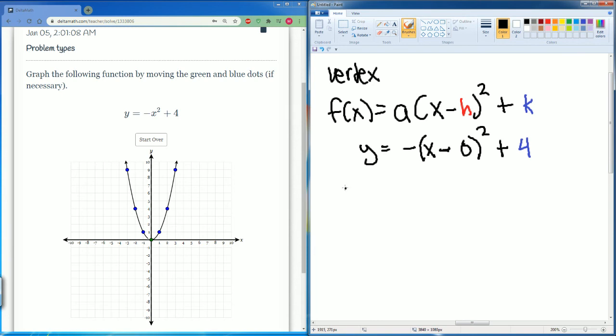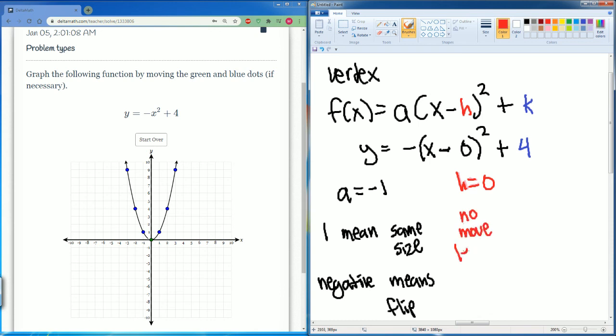So the a here is equal to negative 1. So that 1 means same size. That negative means we flip. Then we have the h, it's equal to 0. So this means no move left or right. And we know that this 4 means up. So the k equals to 4, it's positive. So this means up 4.